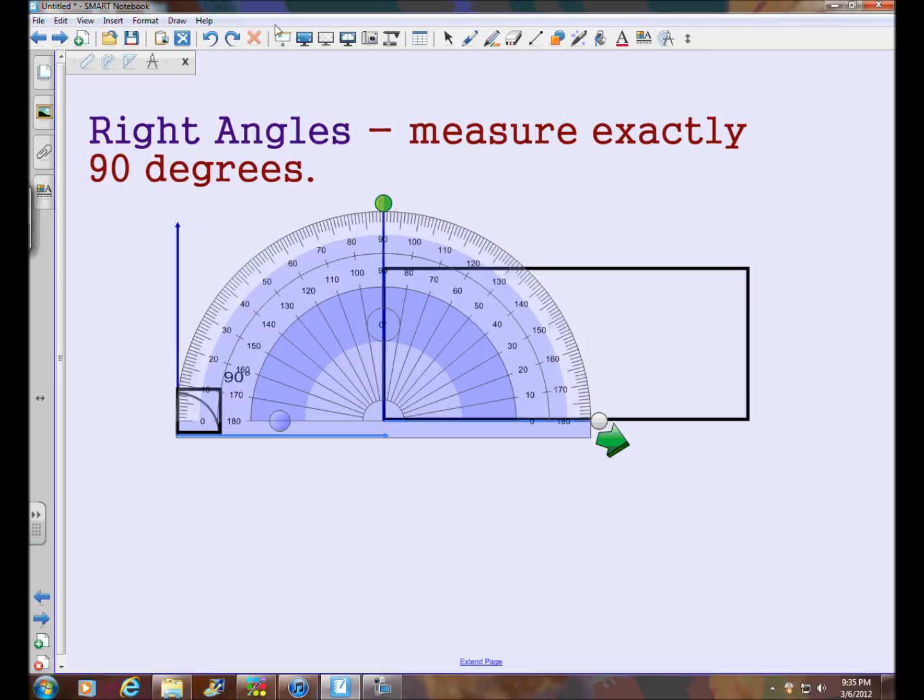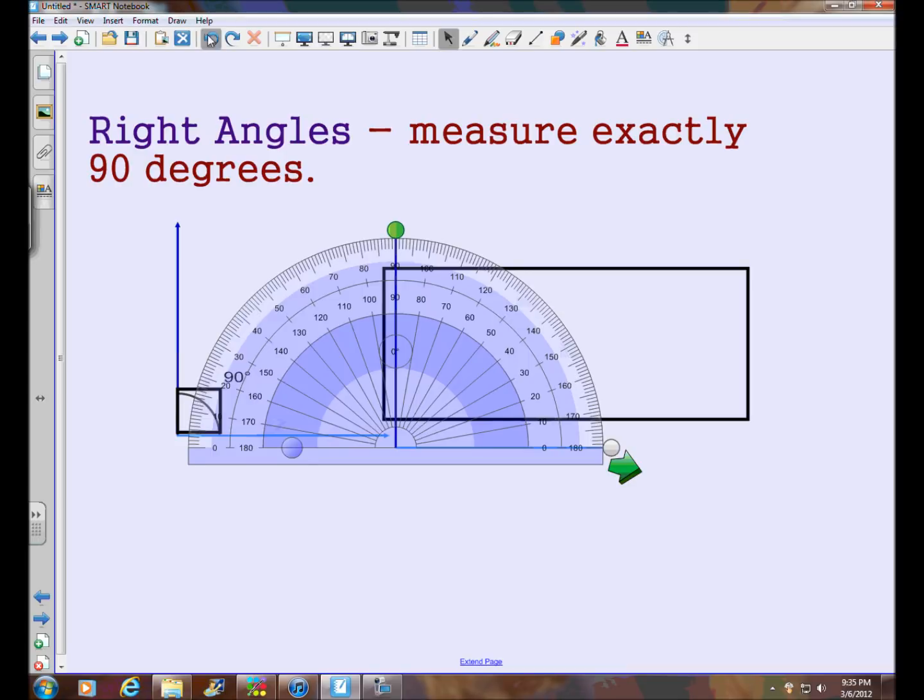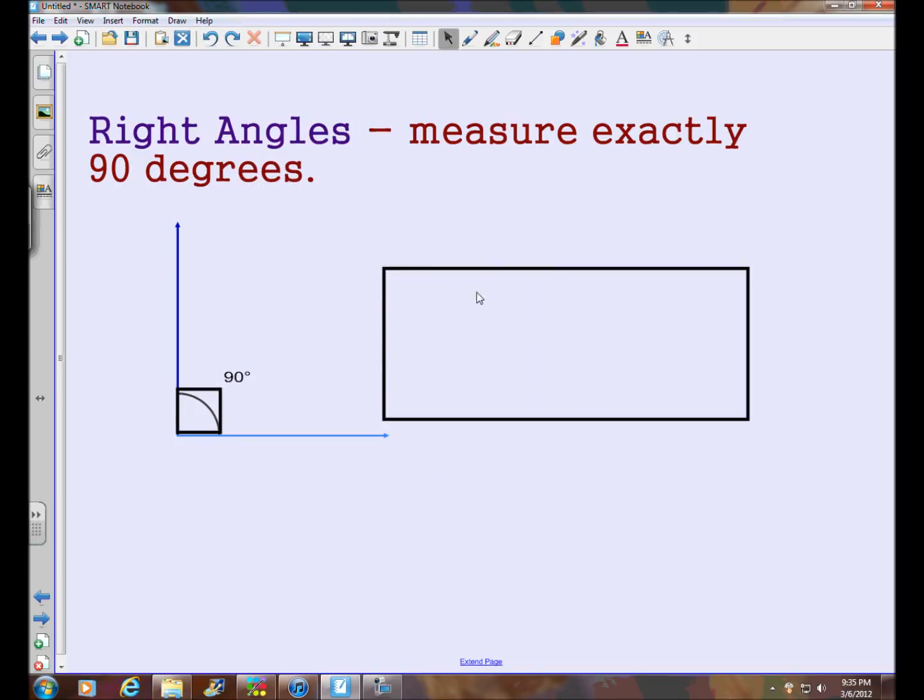So you've got this rectangle and it also has square corners. So you draw that little symbol to represent 90 degree angles. Now these are just rough drawings of the square corner symbol. So right angles measure exactly 90 degrees.